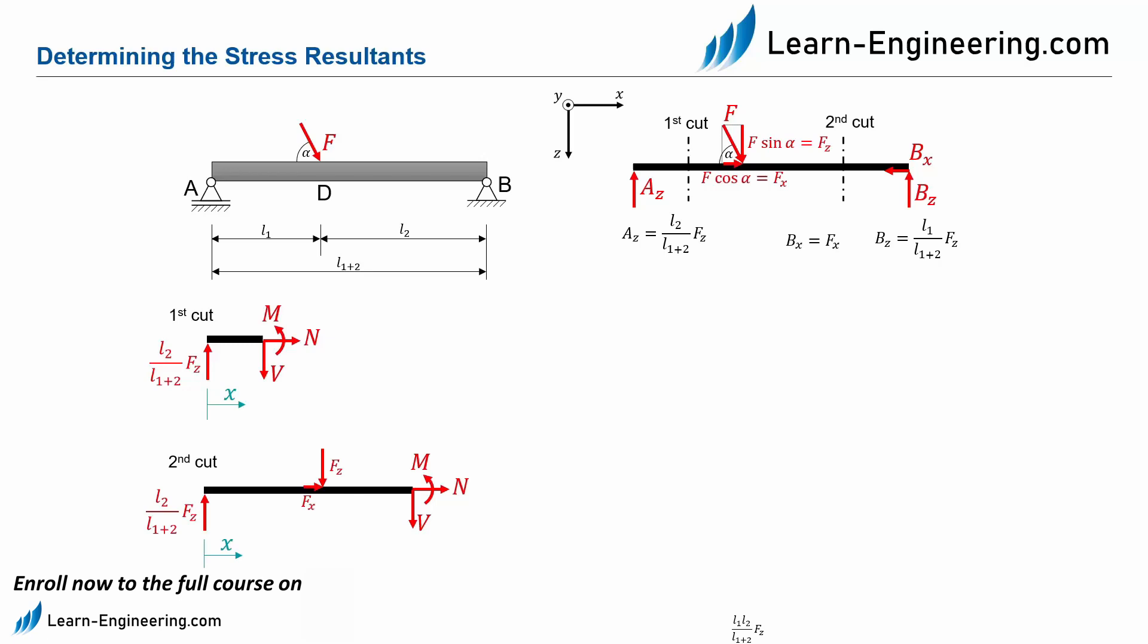We see in the free body diagram that after our second cut there is only the support force of the hinged support, which is at the end of the beam. Since the force is at the end of the beam, we do not need another cut and can start diagramming.